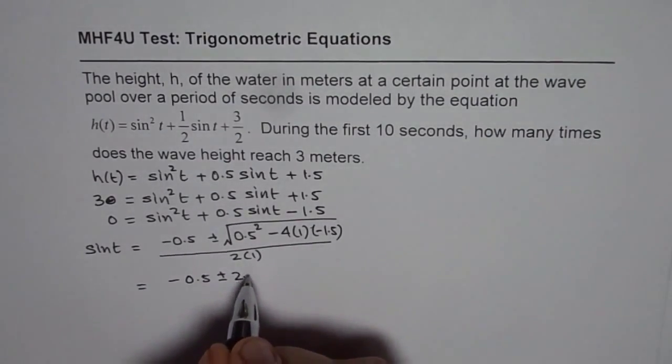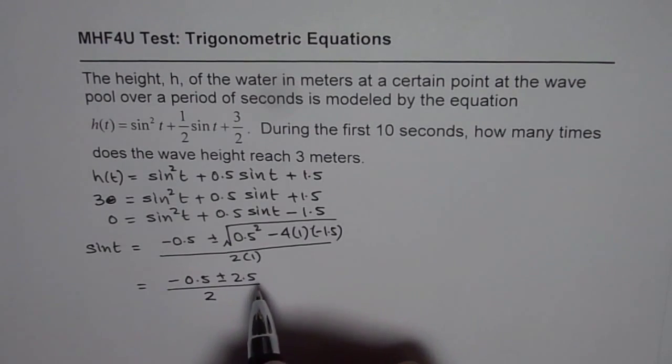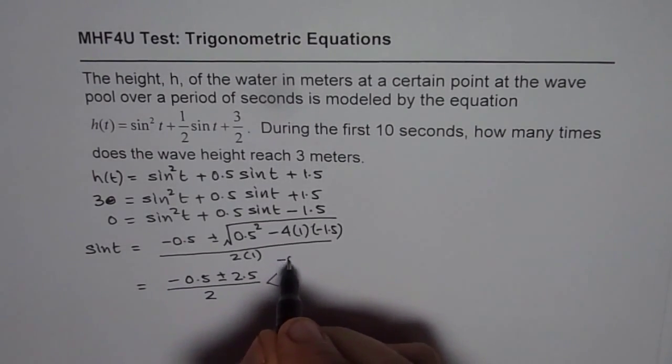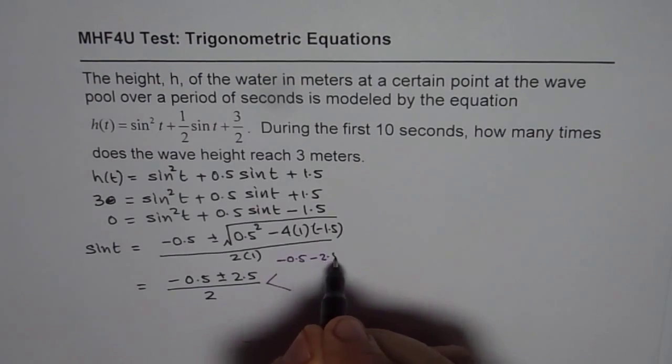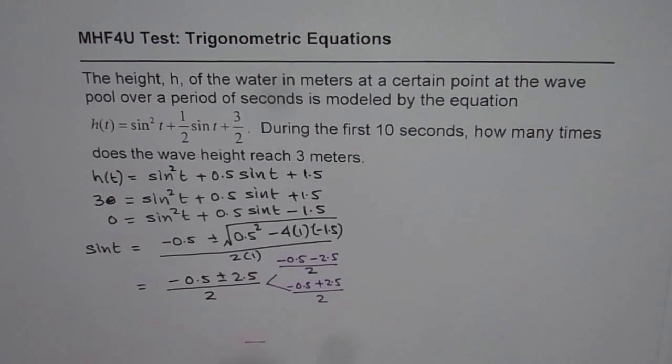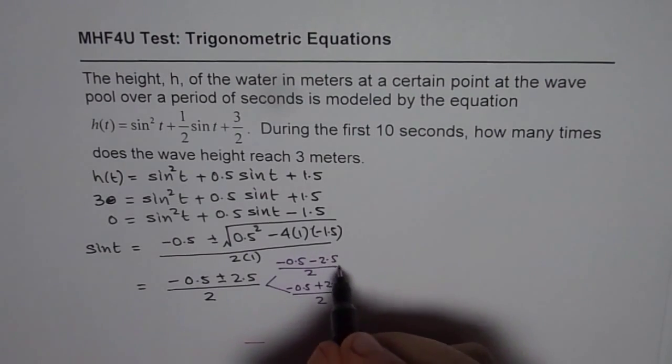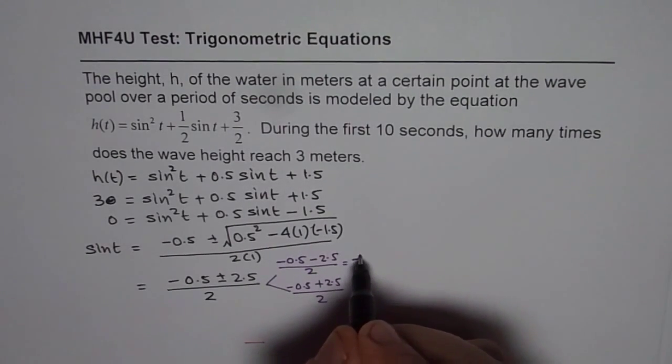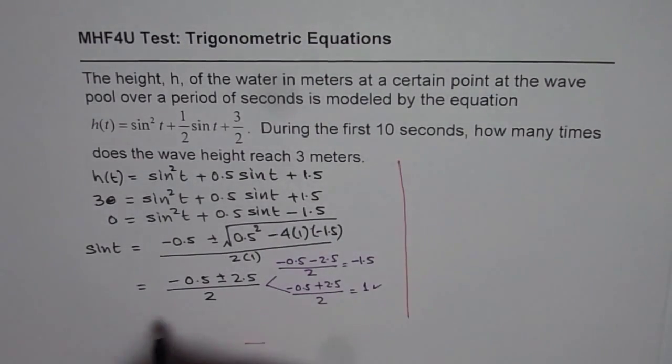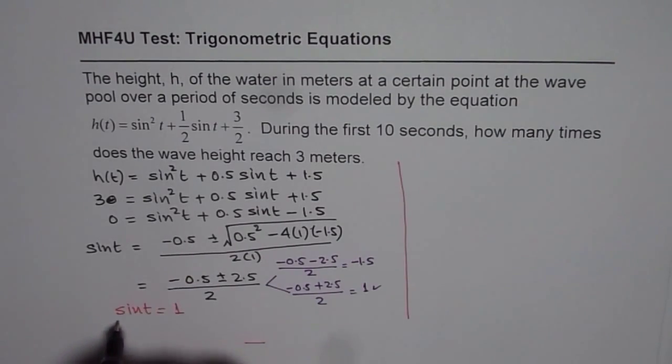So we have plus minus 2.5 over 2. So that gives us actually two possible solutions. So one of them is minus 0.5 minus 2.5 over 2. Now this value is minus 3 divided by 2, so it's minus 1.5. Sin t cannot be more than 1. So that is not a valid answer. Here we get minus 0.5 plus 2.5 is 2 divided by 2 is 1 which seems to be the valid answer. So we have a solution here and that is we can write sin t equals to 1 as a solution.